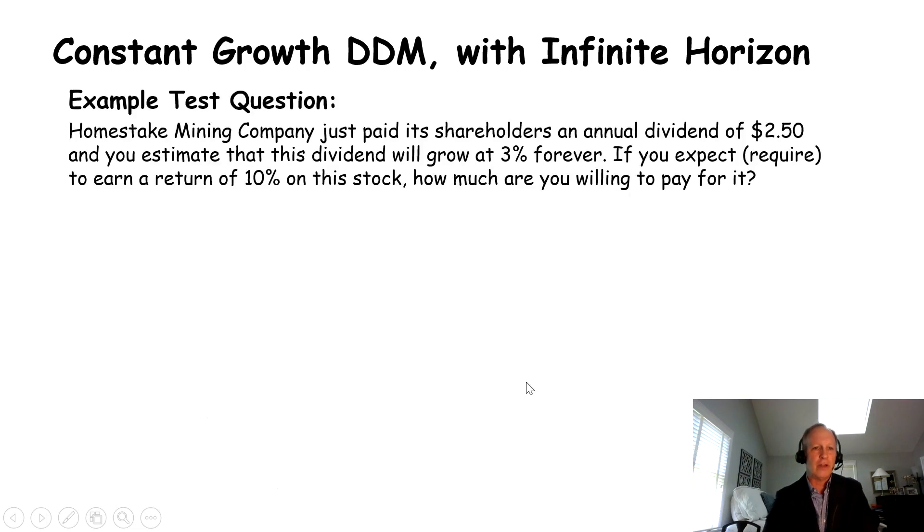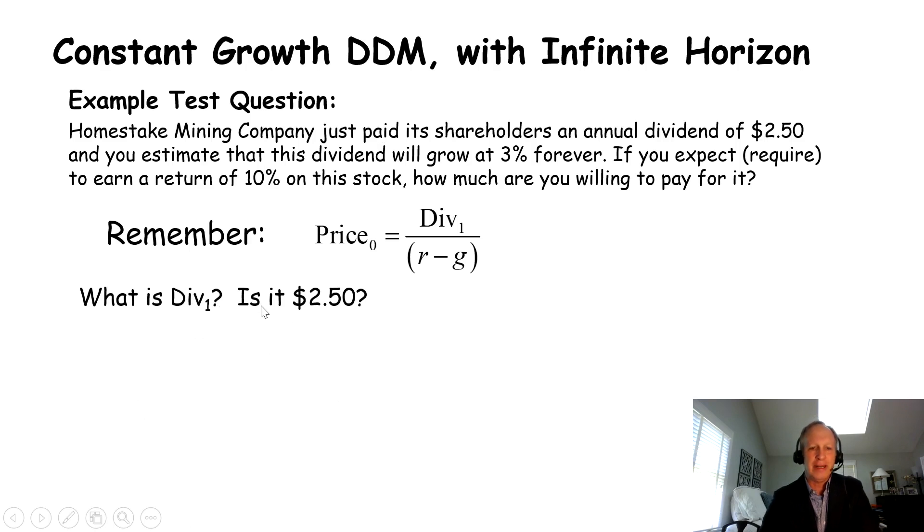Let me give you an example of a test question where this would apply. Homestake Mining Company just paid its shareholders an annual dividend of $2.50. You estimate that this dividend will grow at 3% forever. There's your G, 3% forever. If you expect, require, to earn a return of 10% on this stock, there's your discount rate, 10%. How much are you willing to pay for it? Well, here's the question now. Here's the equation. That's what we're going to use. But the question is, what is div 1? What is next year's dividend? Is it $2.50?